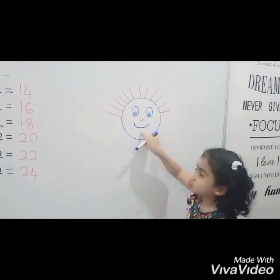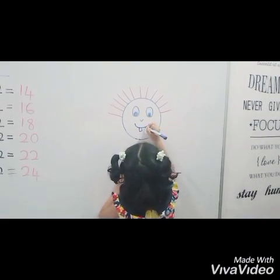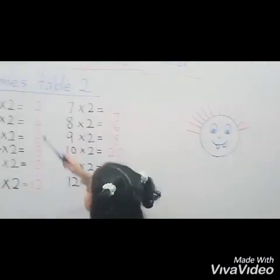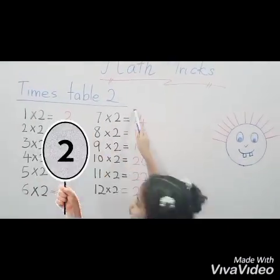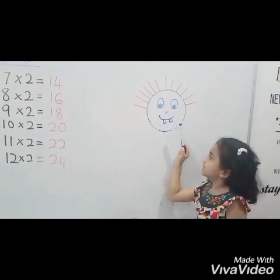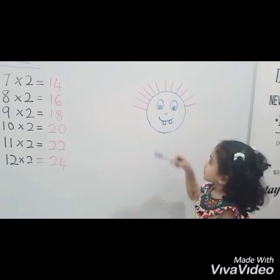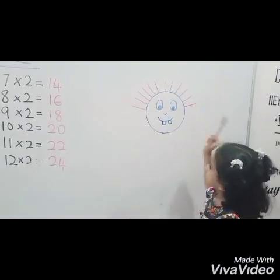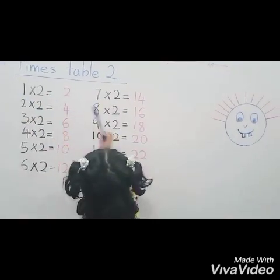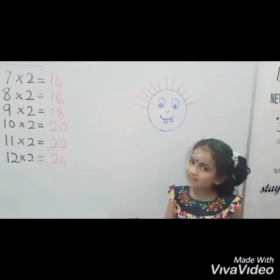I am going to draw 2 tubes here because it is time table 2. If 3 tubes, it is time table 3. If 12 tubes, it is time table 12. This funny man face covers 1 times 2 until 12 times 2. Alright, let's go to the lesson.